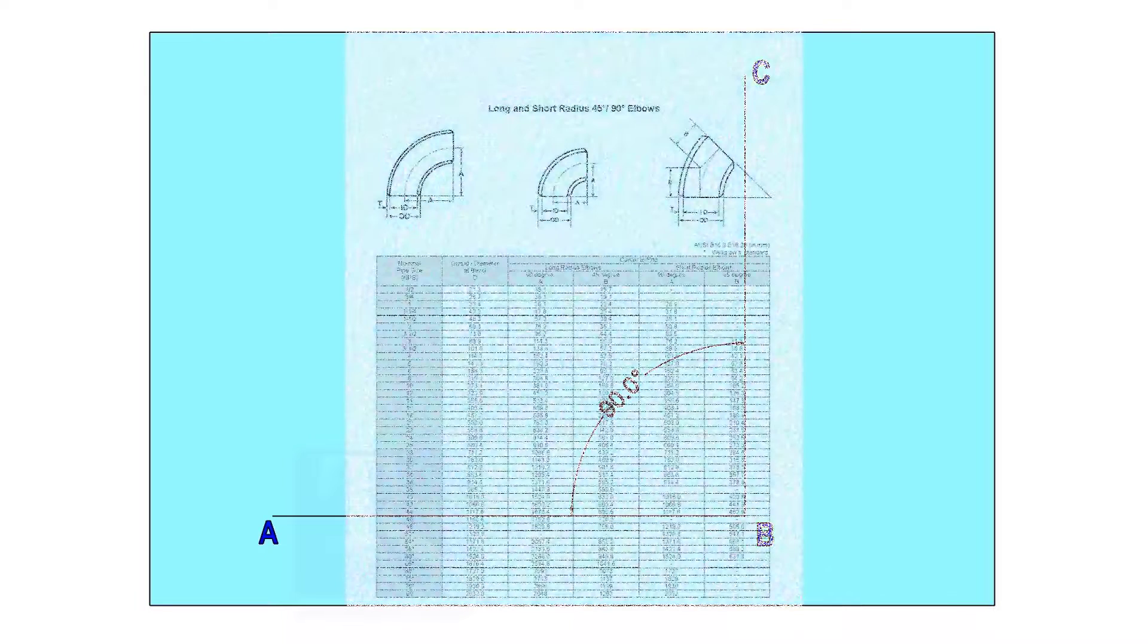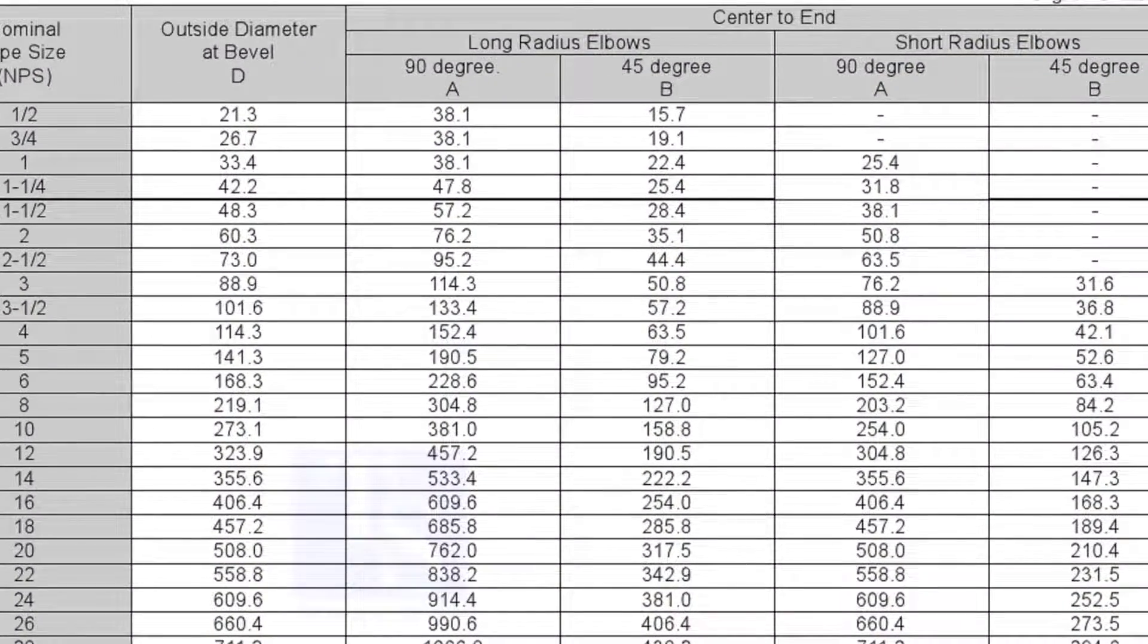Let us mark a 25 degree elbow on a 16 inch large radius elbow. Mark line AB and a perpendicular line BC. Let us check the center radius of 16 inch long radius elbow.